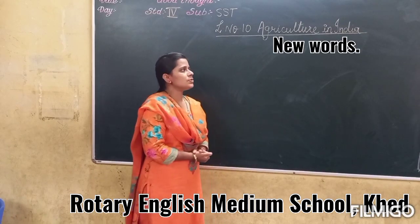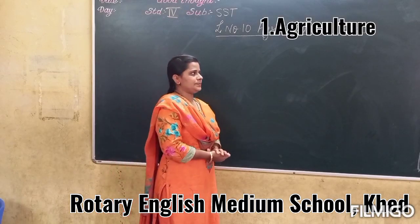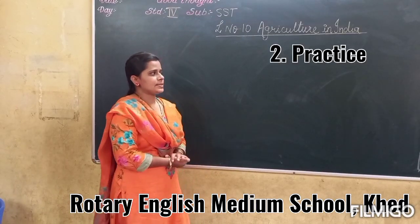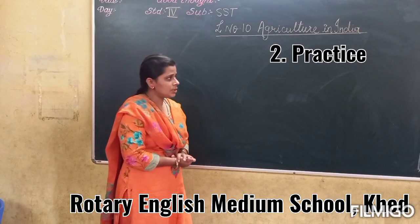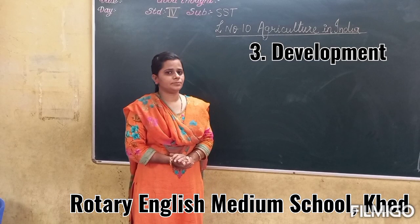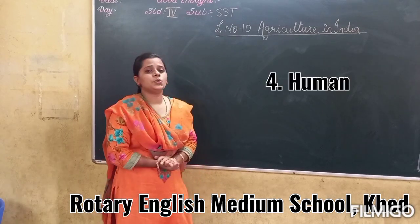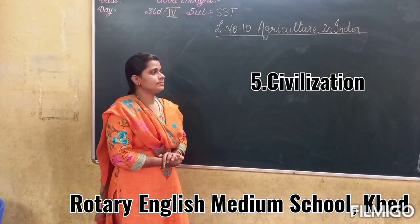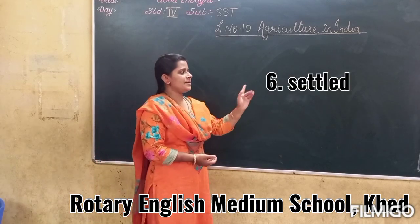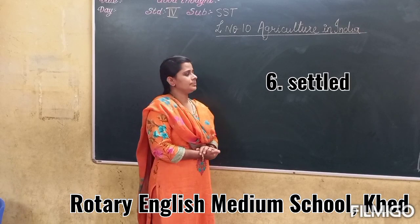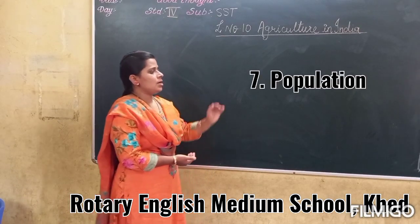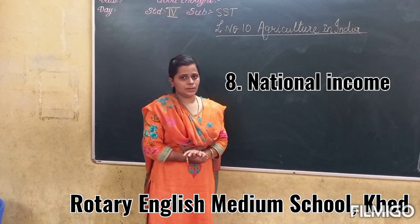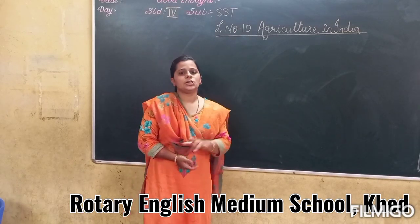Here are your new words to copy: first, agriculture; second, practice; third, development; fourth, human; fifth, civilization; sixth, second; next, preparation; and the last, national income. My dear children, you will learn all these new words.